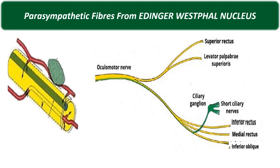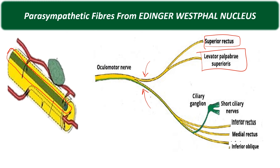The most important connection of the ciliary ganglion is the parasympathetic connection, because this is the one that relays within the ciliary ganglion. The parasympathetic fibers come from the Edinger-Westphal nucleus, a subnucleus of the oculomotor nucleus located in the midbrain. These parasympathetic nerve fibers travel superficially within the oculomotor nerve, in its inferior division, and specifically within the nerve to the inferior oblique on their way to the ciliary ganglion.